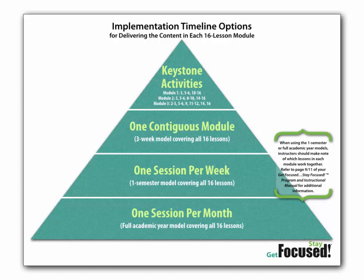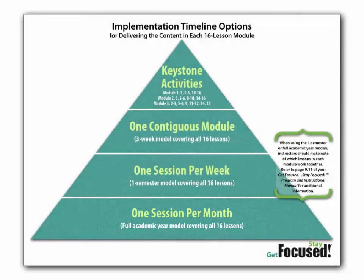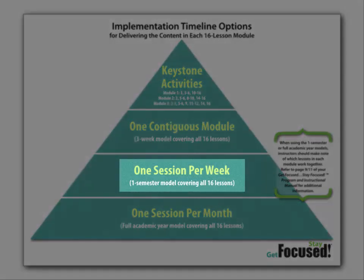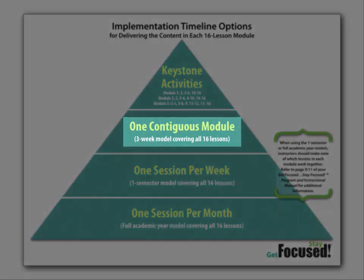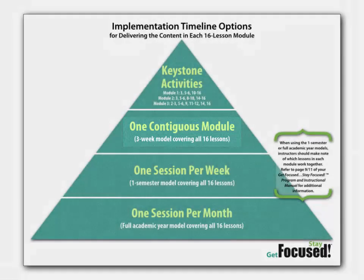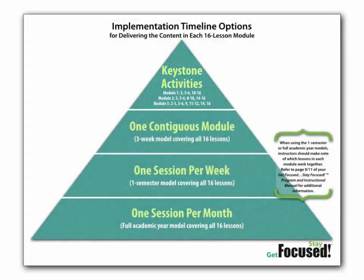When thinking about implementation, there is a timeline option to consider. If you wanted the follow-up module to cover the entire year, you could do one session per month — the full academic year covering all 16 lessons. If you wanted to do one session per week, you would have the module taught over one semester. If you wanted to do it as a unit, you would need three weeks to cover all 16 lessons. And if you cannot dedicate those three weeks, then you can do just the Keystone Activities to make sure all students have access to that core content.